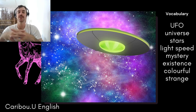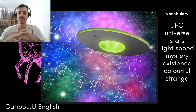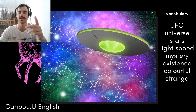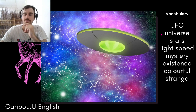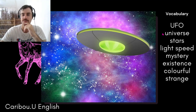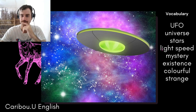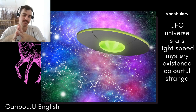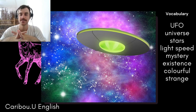The third picture is pretty cool. In my opinion, it's a UFO, which is short for unidentified flying object. The universe is the totality of everything that exists — it's called the universe. There are a lot of stars. Lightspeed means traveling at the speed of light, which is a very fast speed.